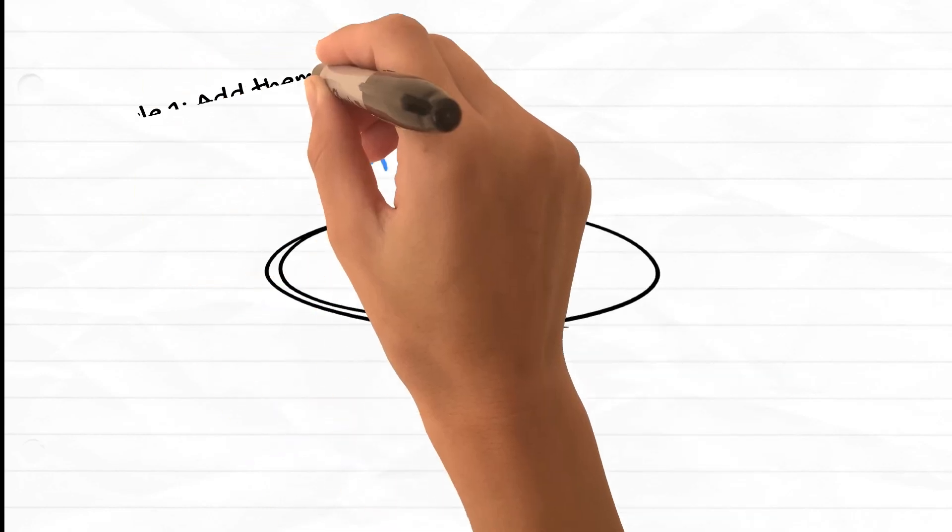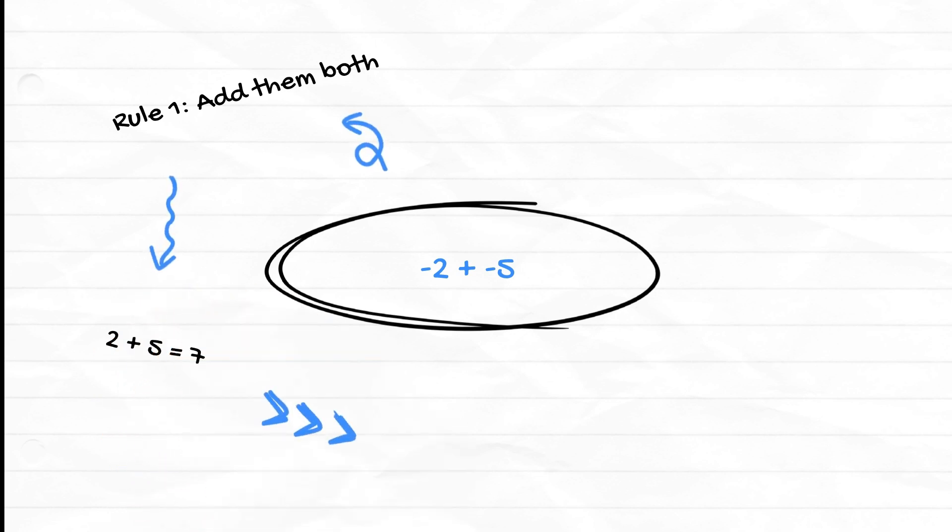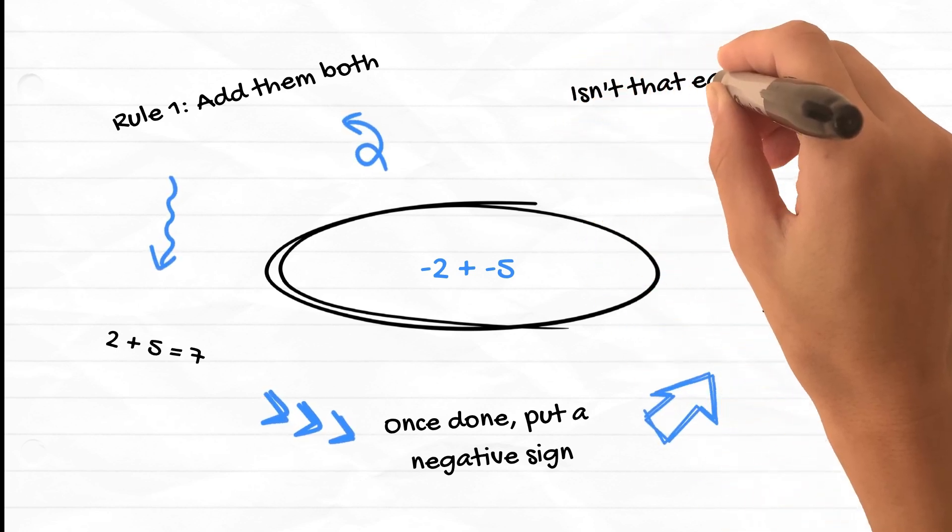Let's look at an example. Negative 2 add negative 5. As per the rule, we add them, then we put a negative sign. Answer will be minus 7. Easy peasy, isn't it?